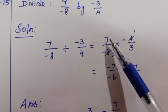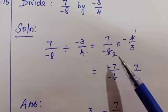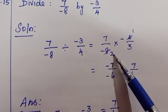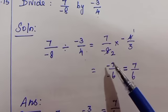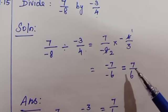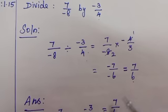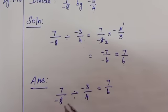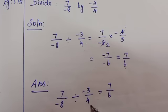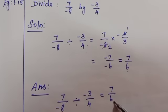So after cancelling we have 7 × (-1) = -7. Here you have -2 × 3 = -6. Minus by minus equals plus, so 7/6. Answer: 7/(-8) ÷ (-3/4) = 7/6.